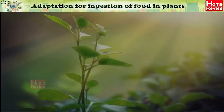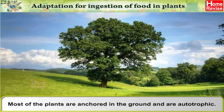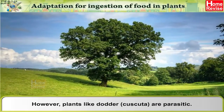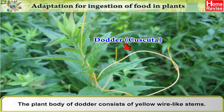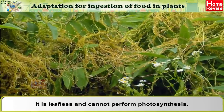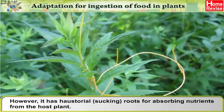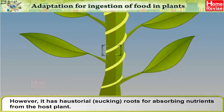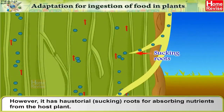Adaptation for ingestion of food in plants: Most plants are anchored in the ground and are autotrophic. However, plants like dodder (i.e., cuscuta) are parasitic. The plant body of dodder consists of yellow wire-like stems. It is leafless and cannot perform photosynthesis. However, it has haustoria, i.e., sucking roots, for absorbing nutrients from the host plant.